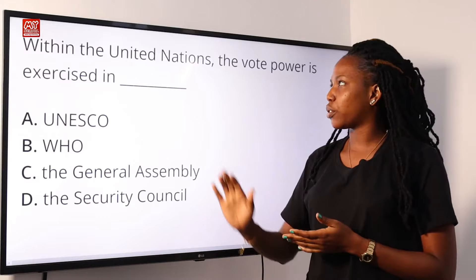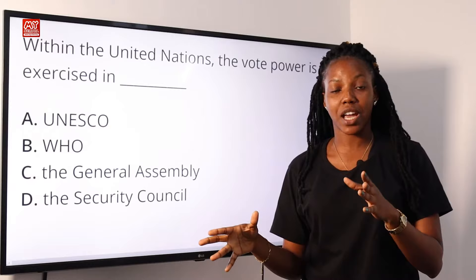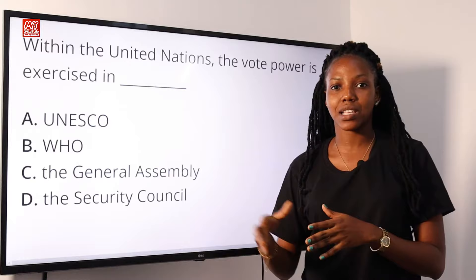So the question says the veto power of the United Nations is exercised where? It's exercised in the Security Council. The Security Council is made up of five permanent member countries and these are the countries that exercise veto power. Option D is the correct answer.